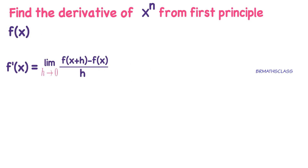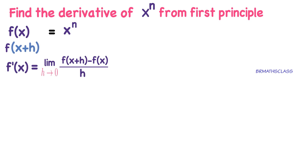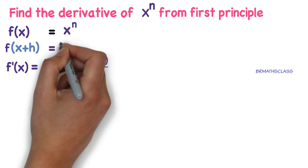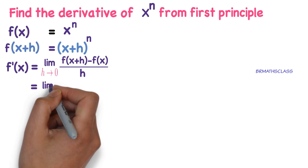Whichever function's derivative you want to find, you take that function as f of x. What is f of x? x power n. Now we need f of x plus h — just replace x with x plus h. So what is f of x plus h? x plus h whole power n. Now you substitute these two things here.